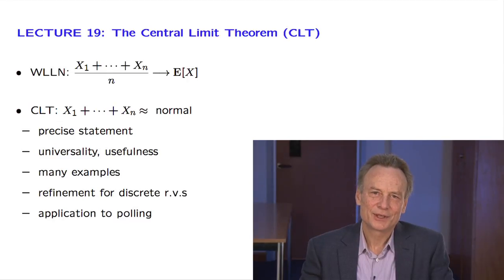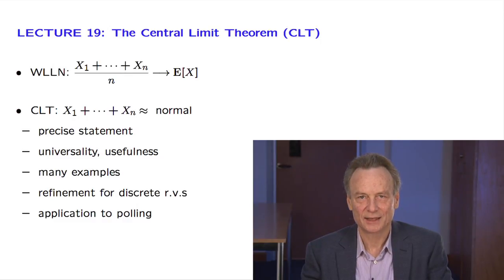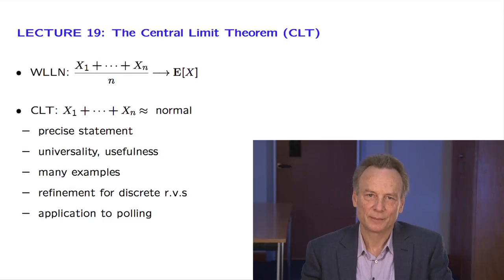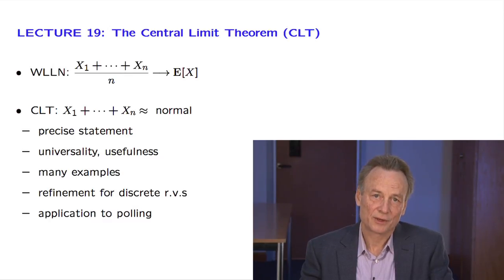The weak law of large numbers tells us that the sample mean — that is, the average of independent identically distributed random variables Xi — converges in a certain sense to a number, namely the expected value of the random variables Xi. But it does not tell us much about the details of the distribution of the sample mean.